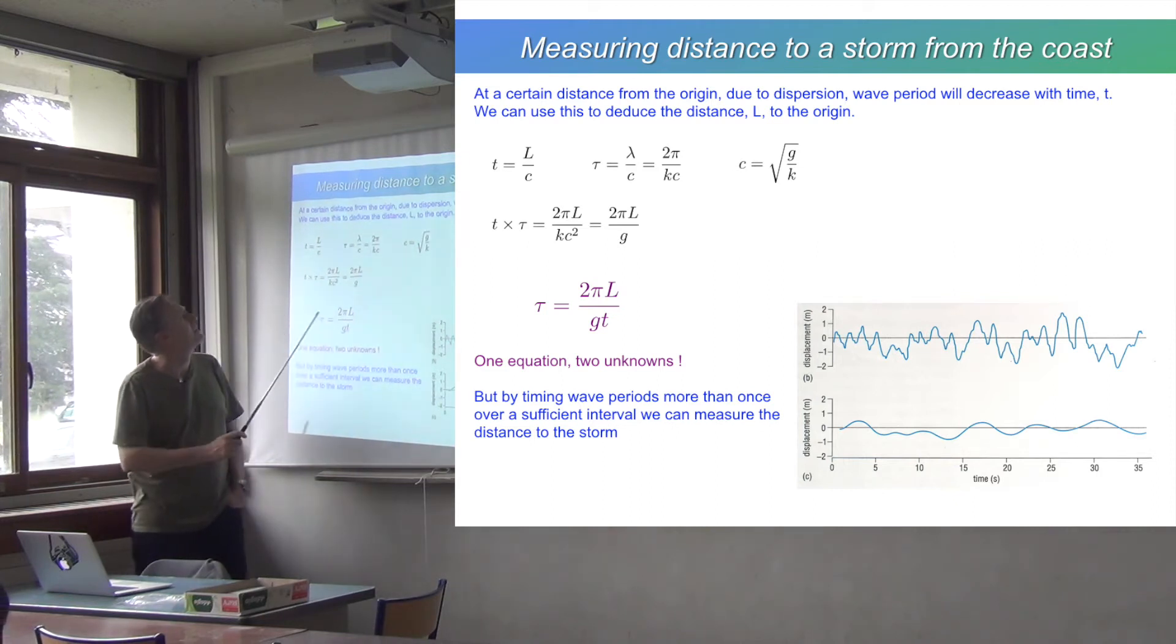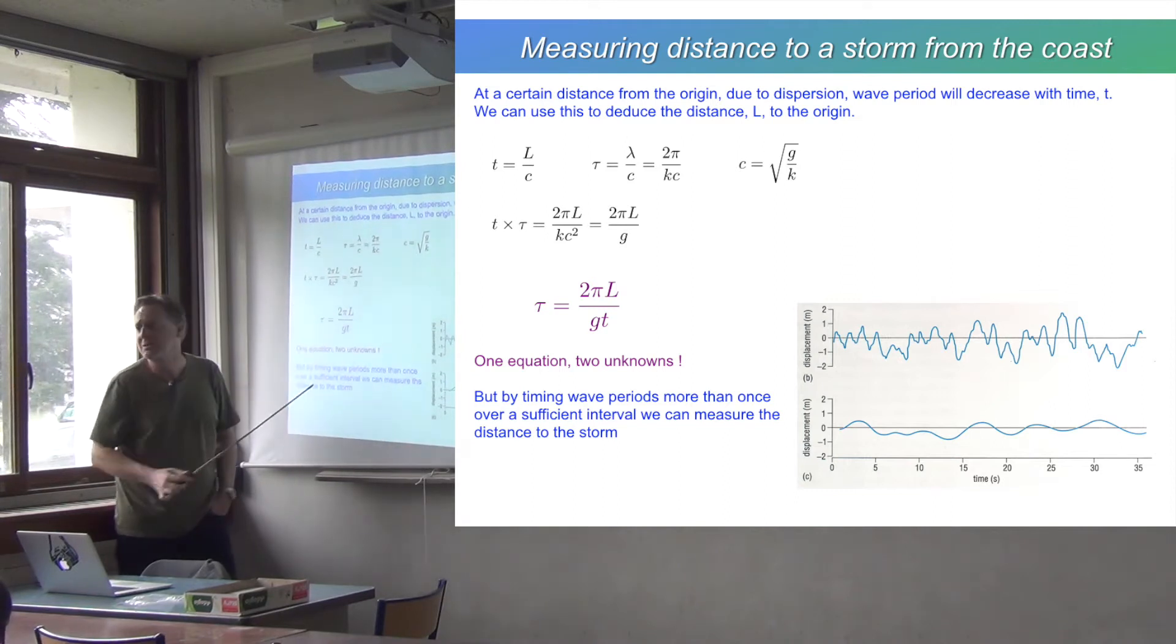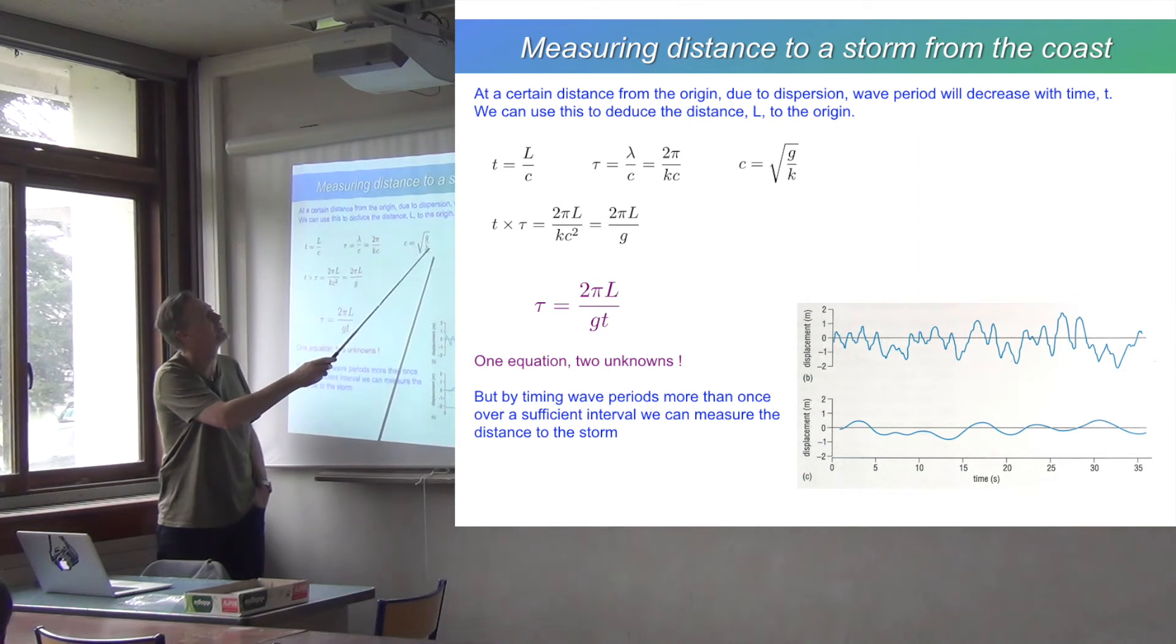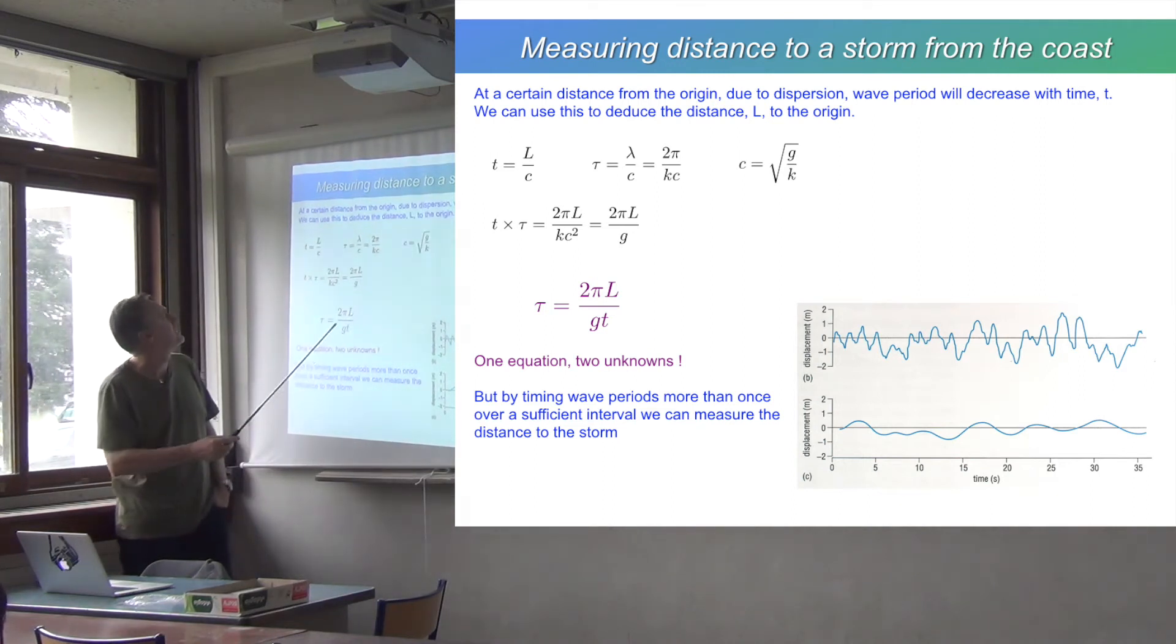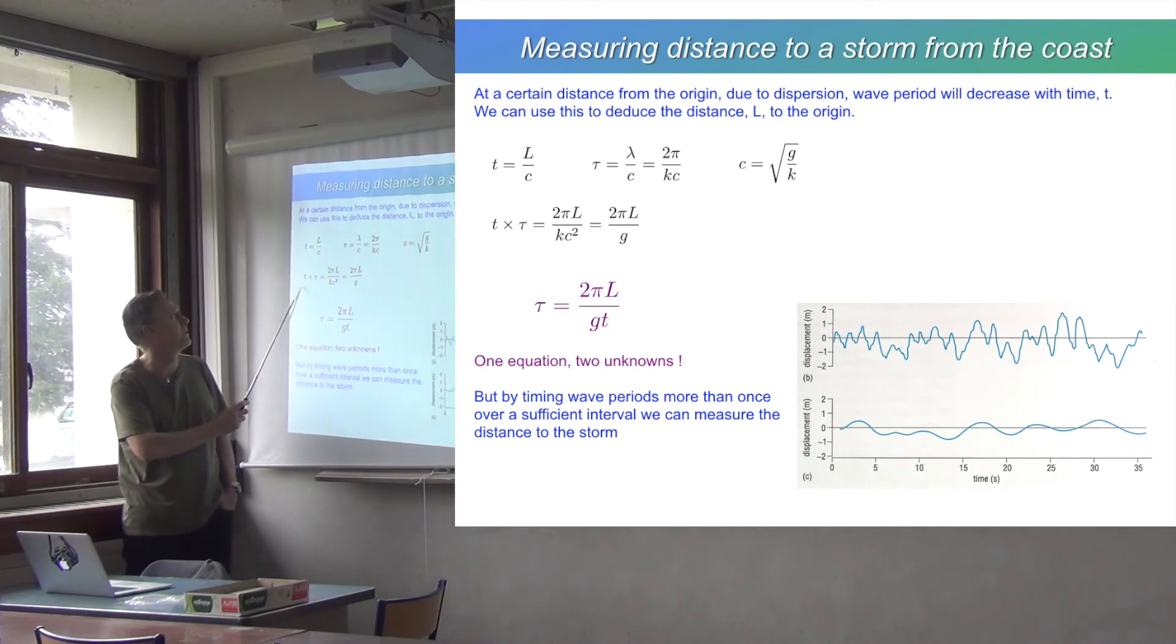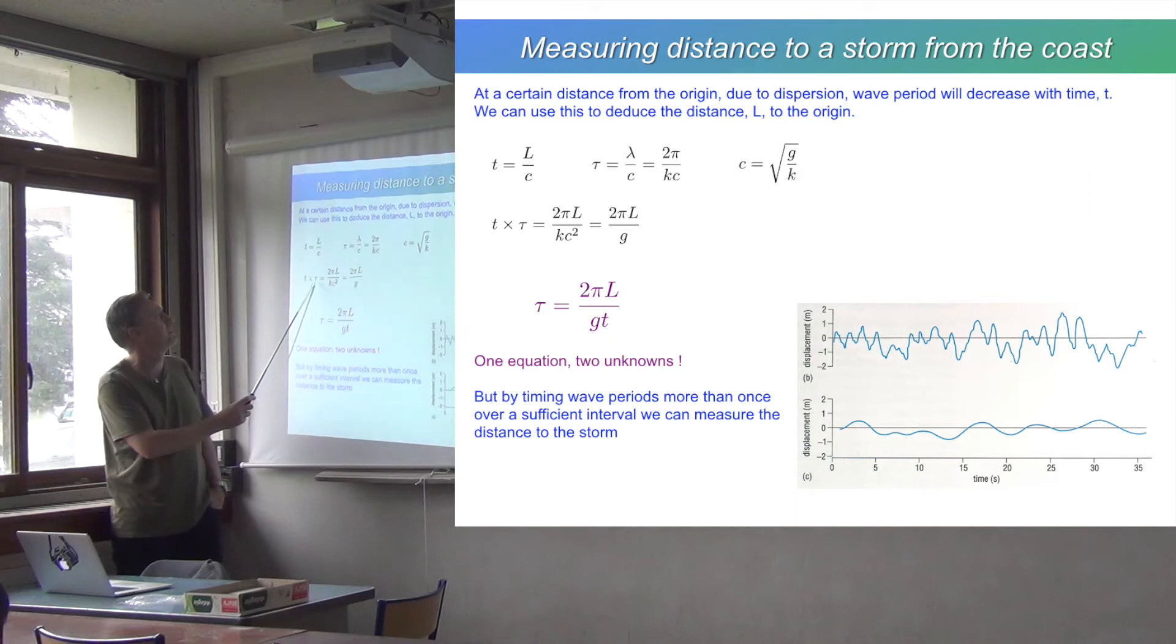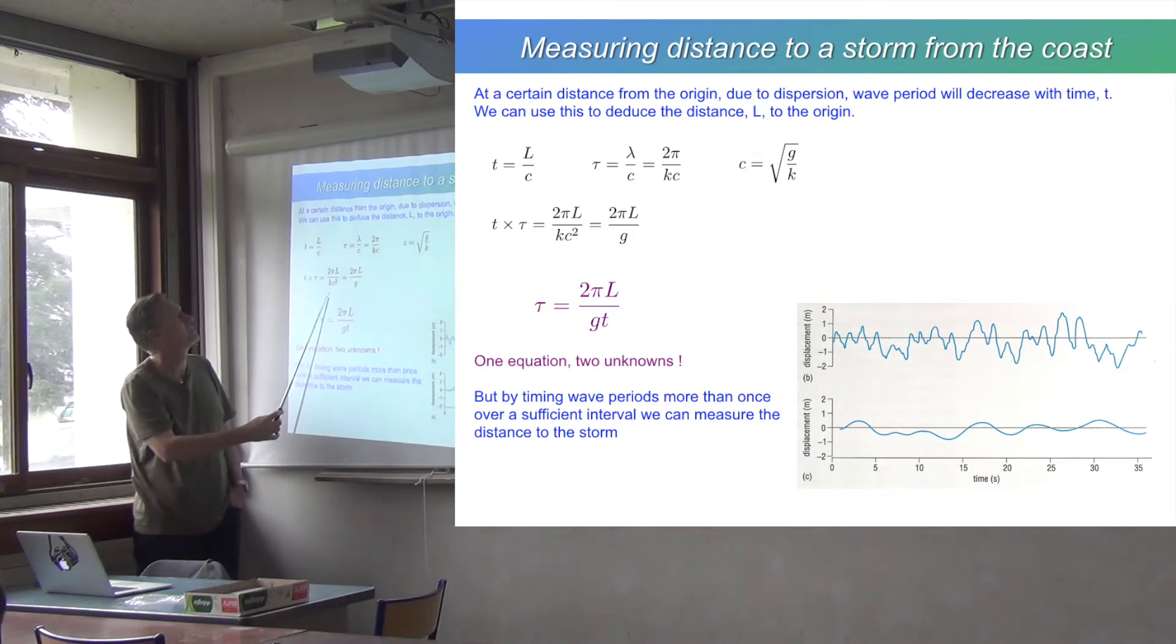So we can combine these two things. And we also know from the dispersion relation for deep water that the phase speed is root G over K. So we can form the product time times period. So that's the time since the storm times the wave period. So it's 2πL over KC². And we can substitute from here for C². So we get 2πL over G.